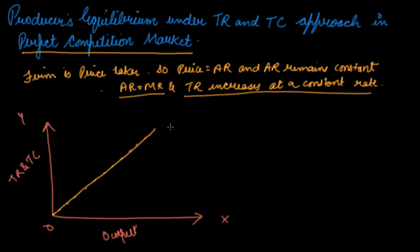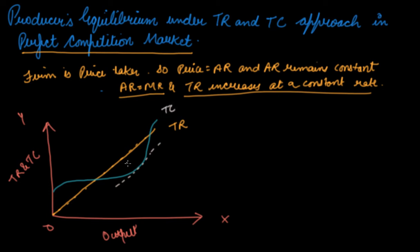So this is your TR curve — a straight line. Now your total cost curve will be drawn in the usual shape. What you will do is draw a tangent to your TC curve that is parallel to the TR straight line.